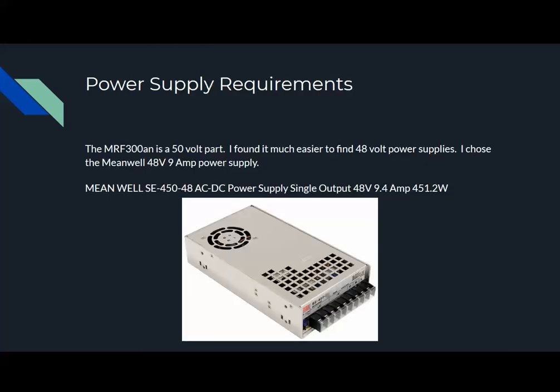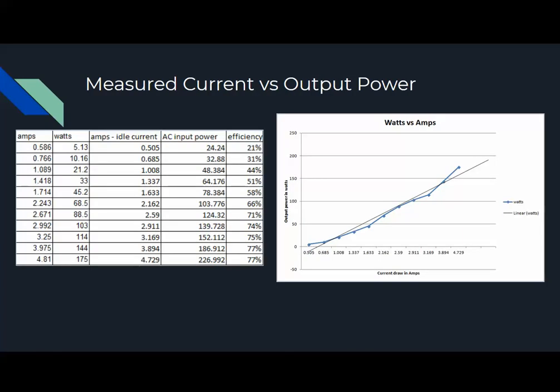The power supply I chose was a Meanwell 48 volt DC 9.4 amp power supply. And here's the measured current versus the output power. As you can see, it looks to be linear.